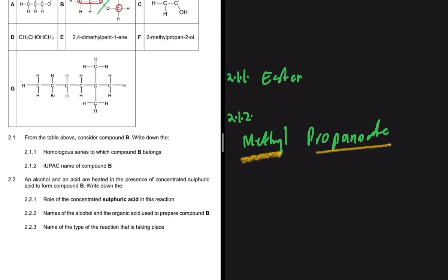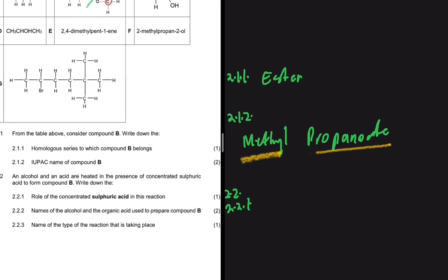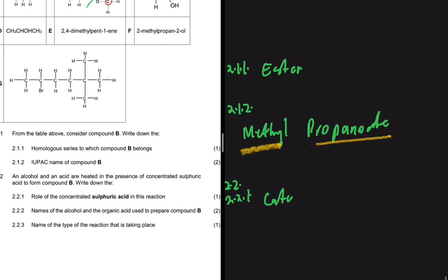Moving to question 2.2: an alcohol and an acid are heated in the presence of concentrated sulfuric acid to form compound B. Question 2.2.1 asks for the role of concentrated sulfuric acid in this reaction. Sulfuric acid in an esterification acts as a catalyst — it speeds up the reaction. So the answer to 2.2.1 is catalyst.